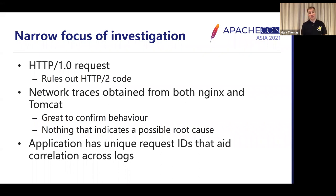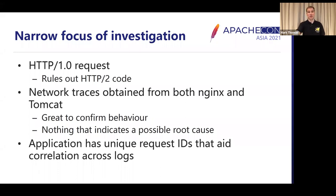In terms of Wireshark traces, we had traces for both ends of the connection between NGINX and Tomcat. What that meant was we could rule out any strange goings-on within the network because we were seeing exactly the same thing at both ends. So it was great to confirm that, but there was absolutely nothing in those logs that really told us why things were going wrong. The other piece of information was that the application had a unique ID that meant we could use it to correlate information between the logs.